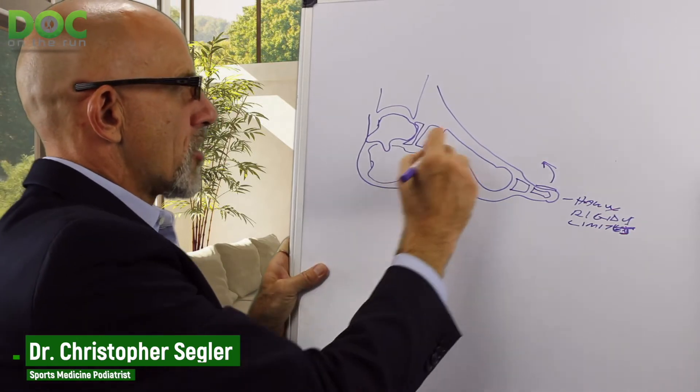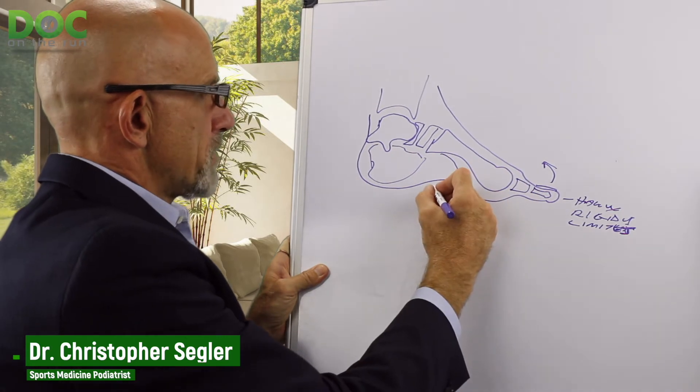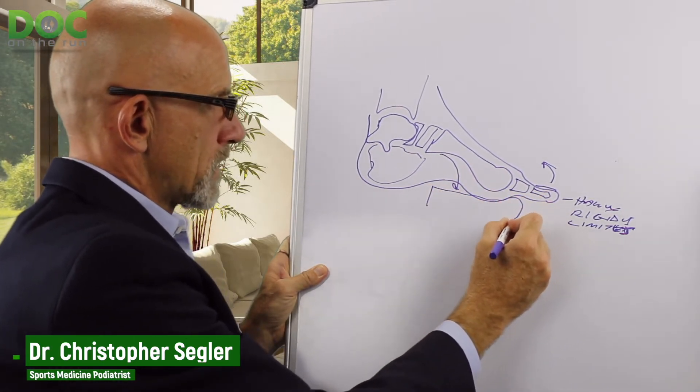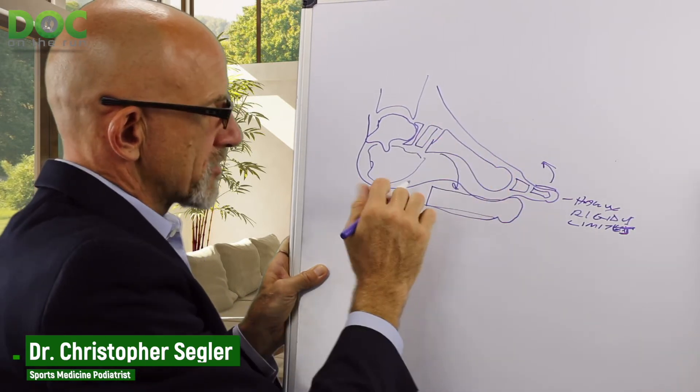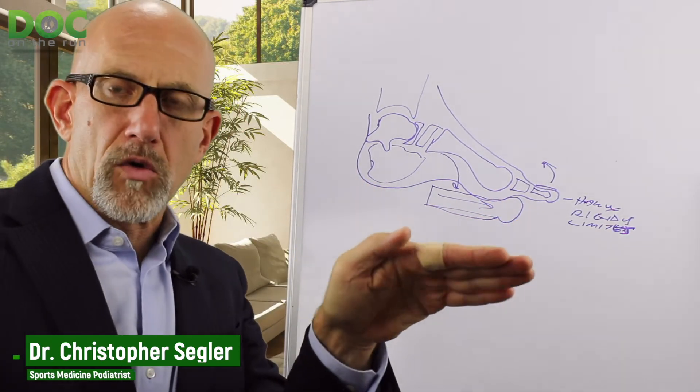When you pronate and your arch collapses, your arch comes down. If you think about it, if the base of the bone is here and then it's flat instead of upright, that angulation, the difference, actually pushes it forward. So as your arch collapses, it actually pushes your toes outward.